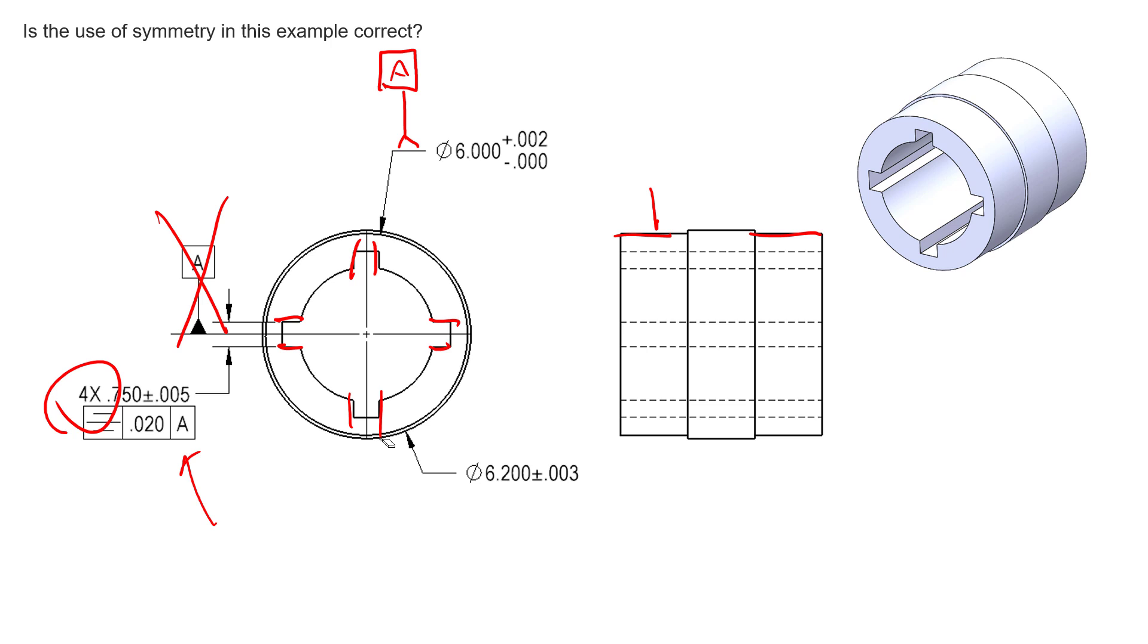Why that is not legal is because symmetry has to control symmetry back to a datum plane. So the feature that creates our datum here, datum A, needs to be a planar datum. In this instance, this is an axis as a datum, and so we cannot control symmetry about an axis. So again, big reason not to use symmetry in this scenario.